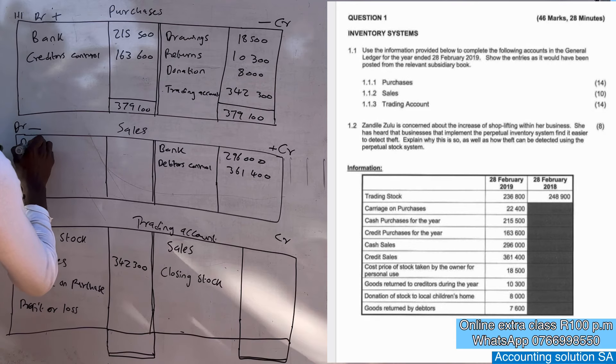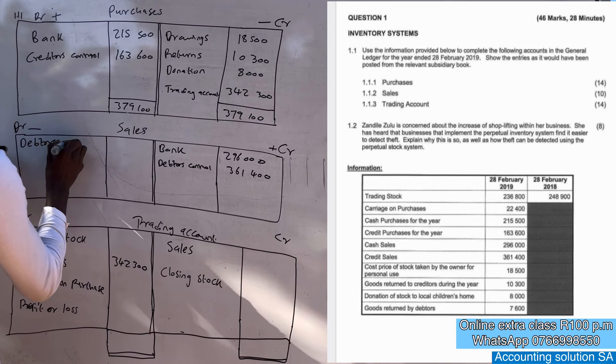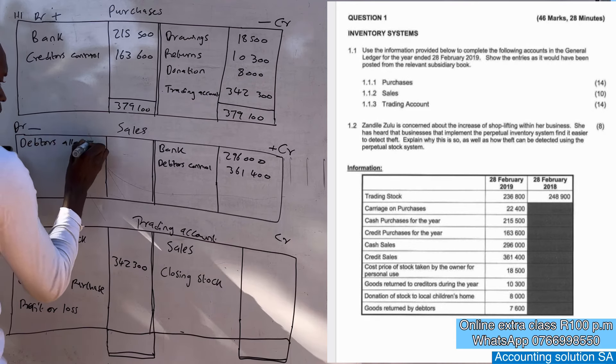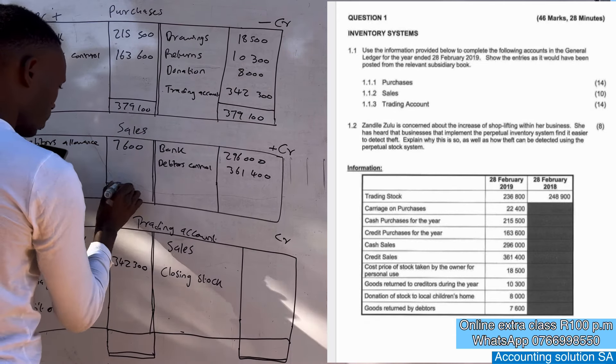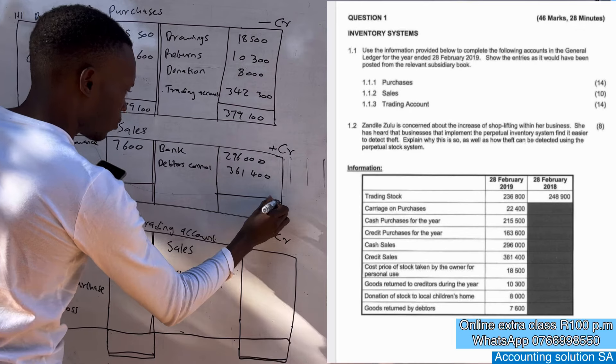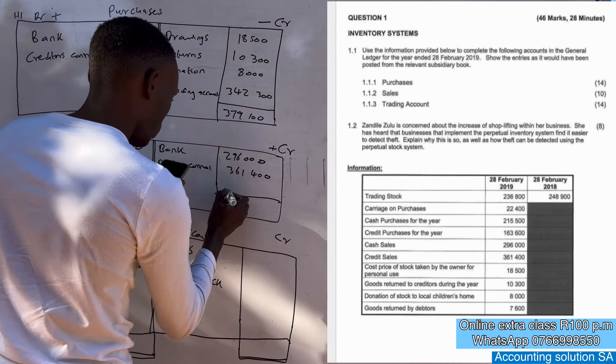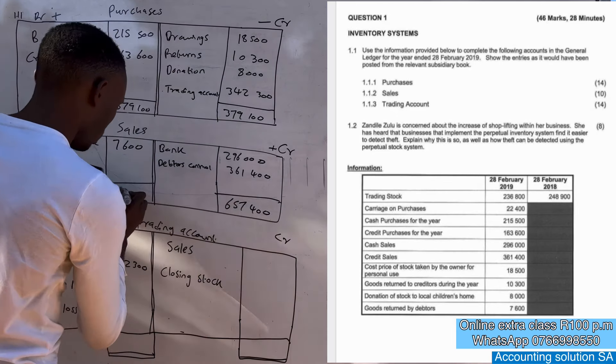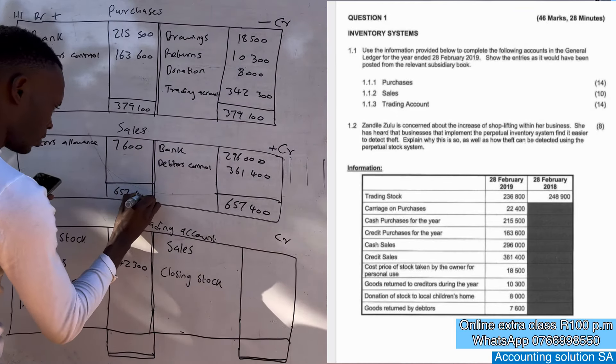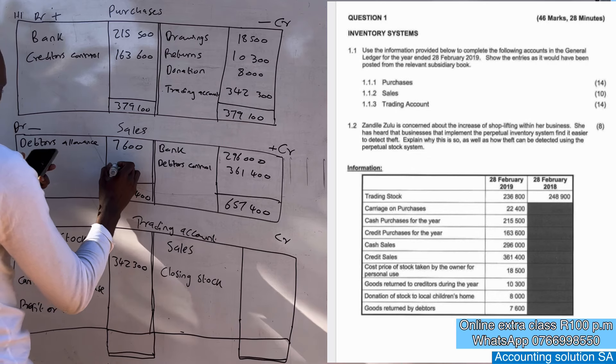And we also have a return, goods returned by a debtor, that is a debtors allowance. Debtors allowance decrease our sales and it is 7,600. We are done with this account, we must get total this side which is going to give us 657,400.